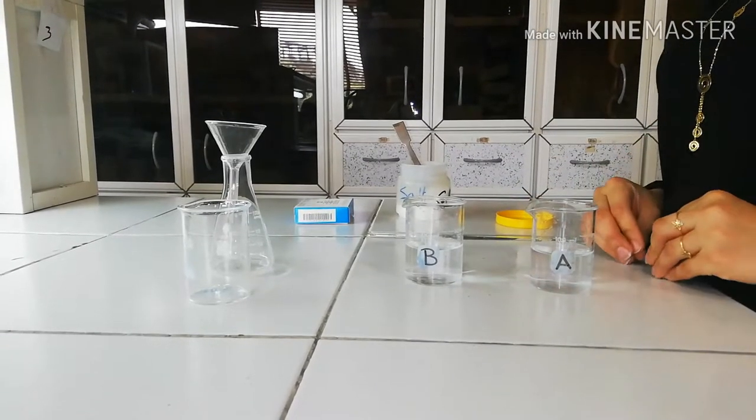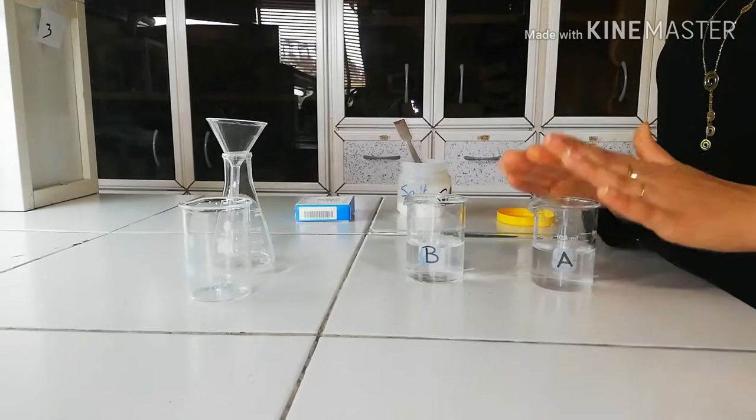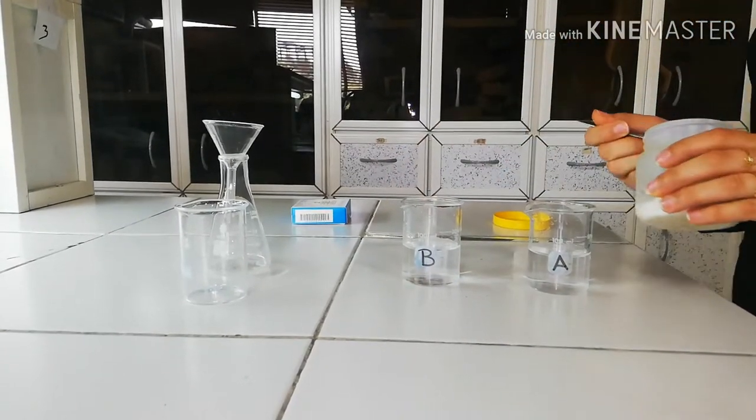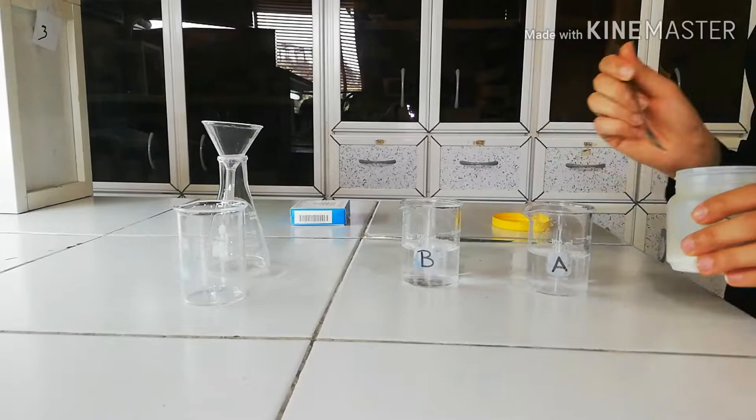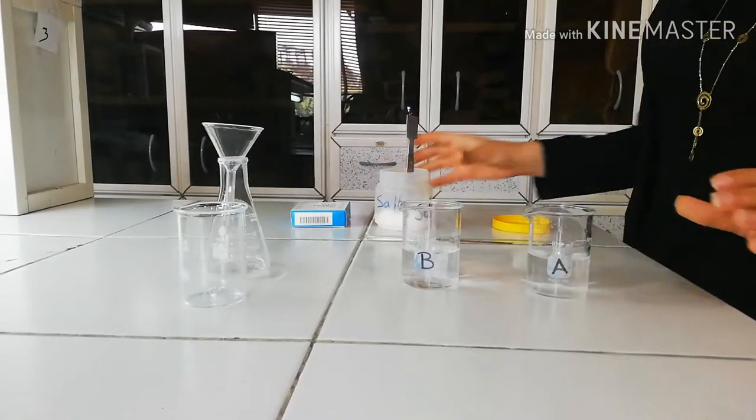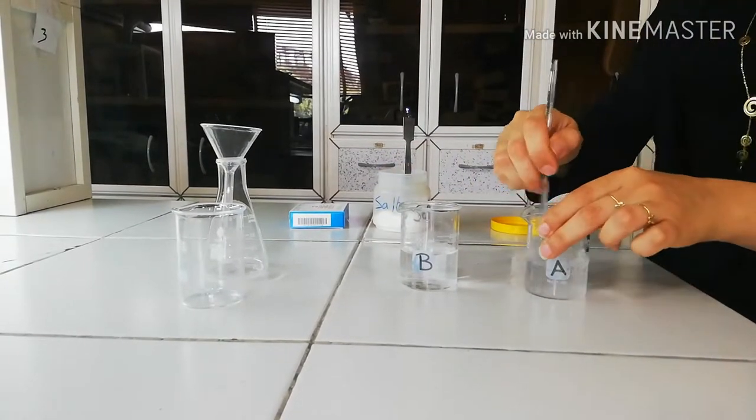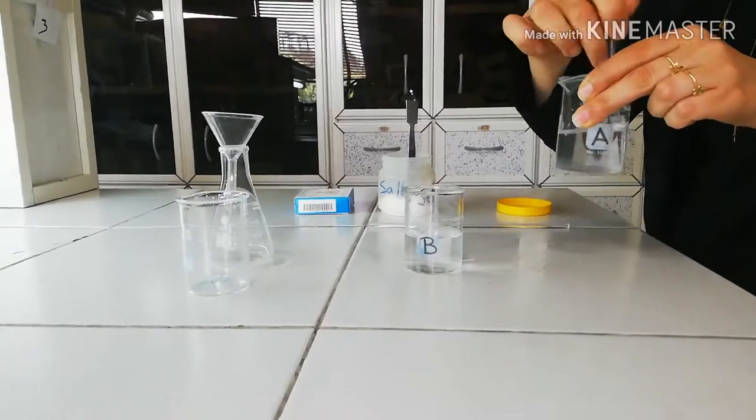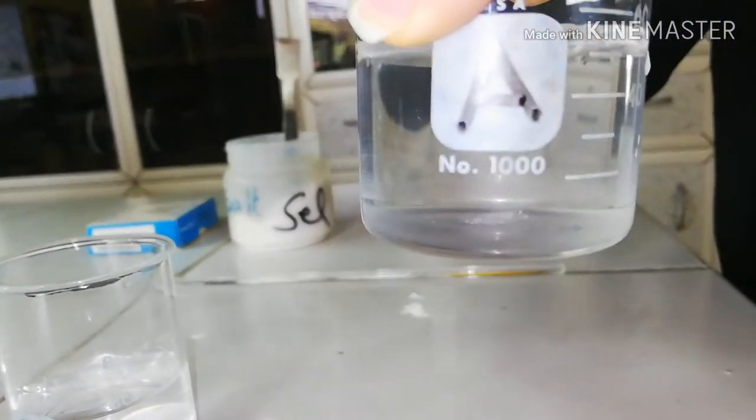So I'm going to prepare an unsaturated solution in beaker A. For that, I'm going to add a small amount of sodium chloride, which is table salt, into beaker A. And I'm going to stir. All the salt is dissolved in water.